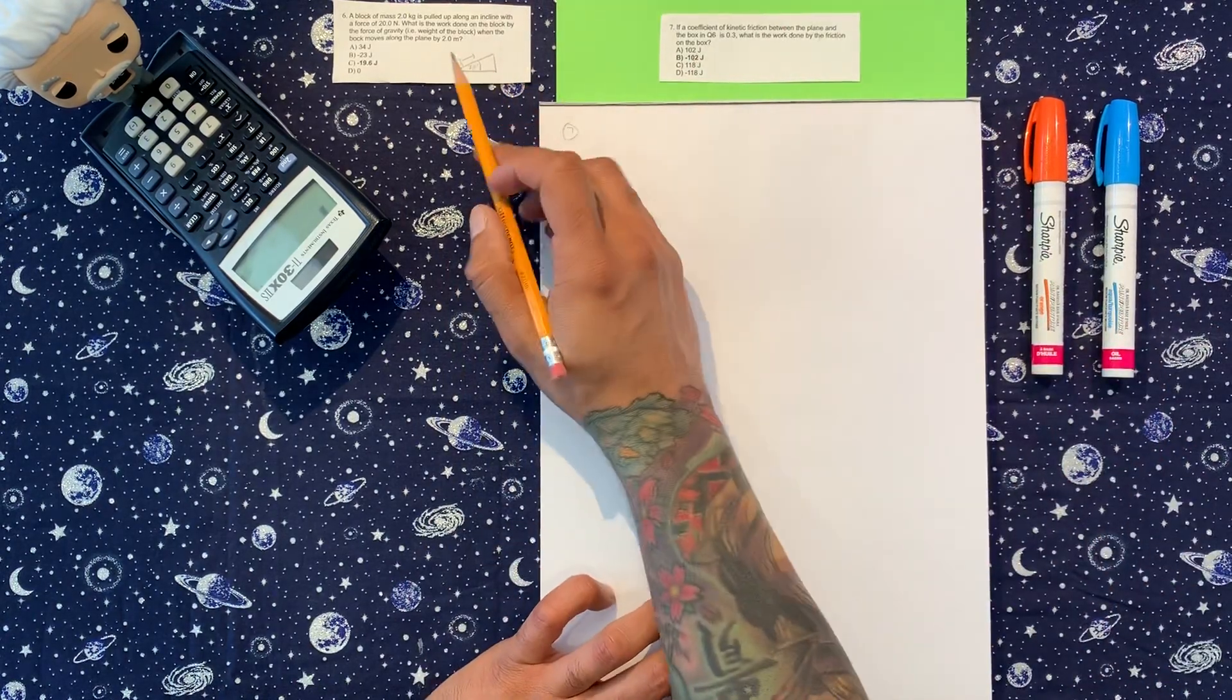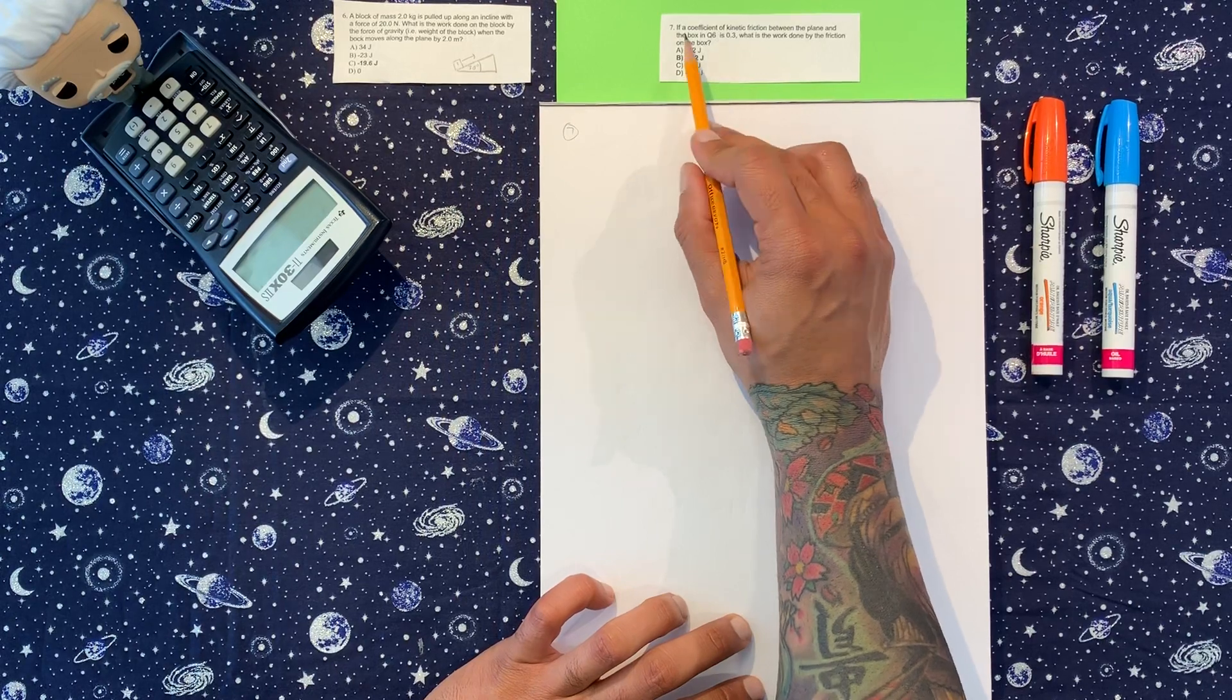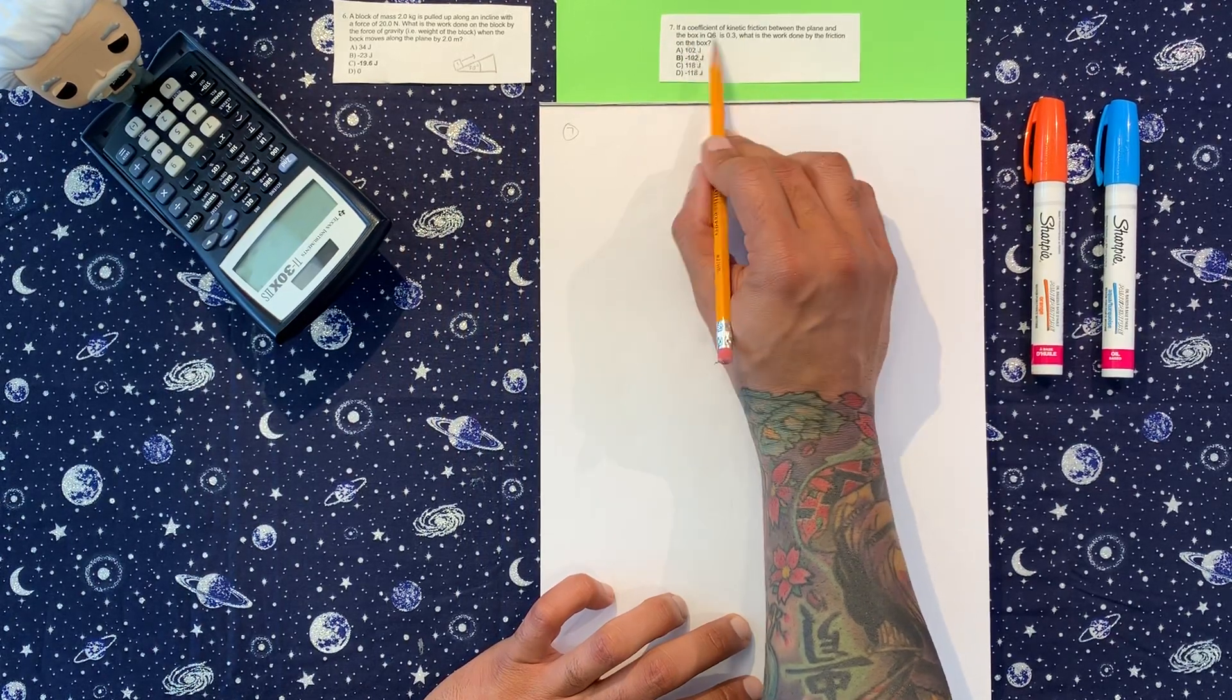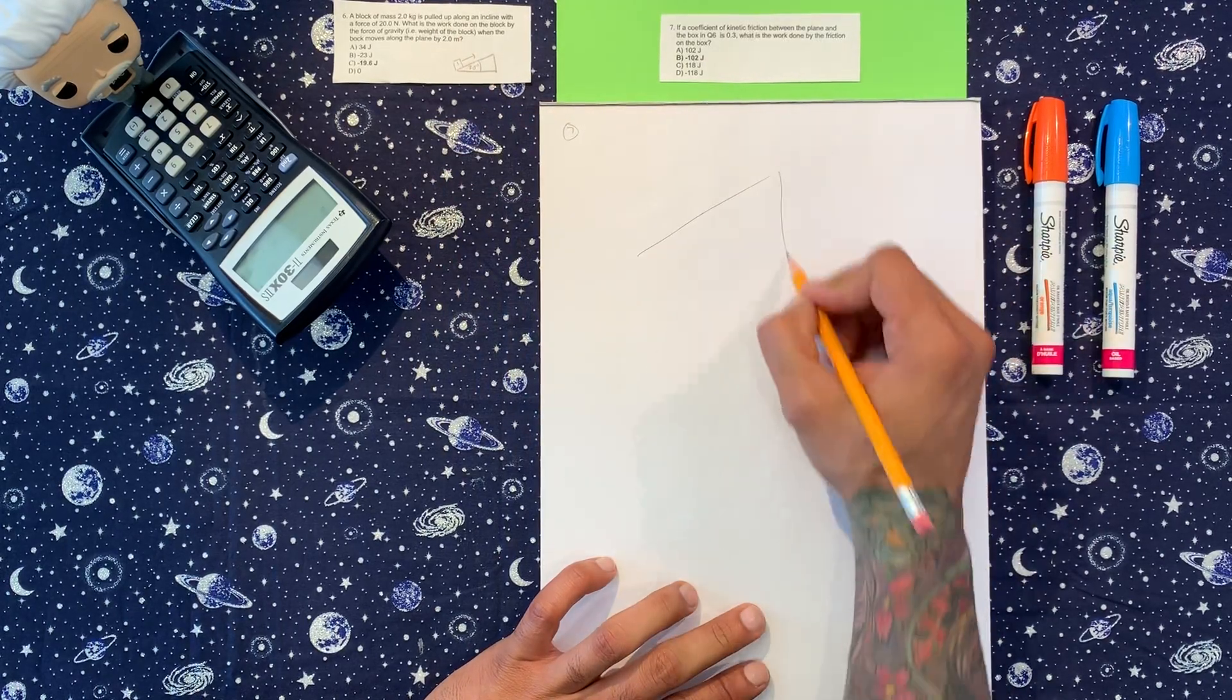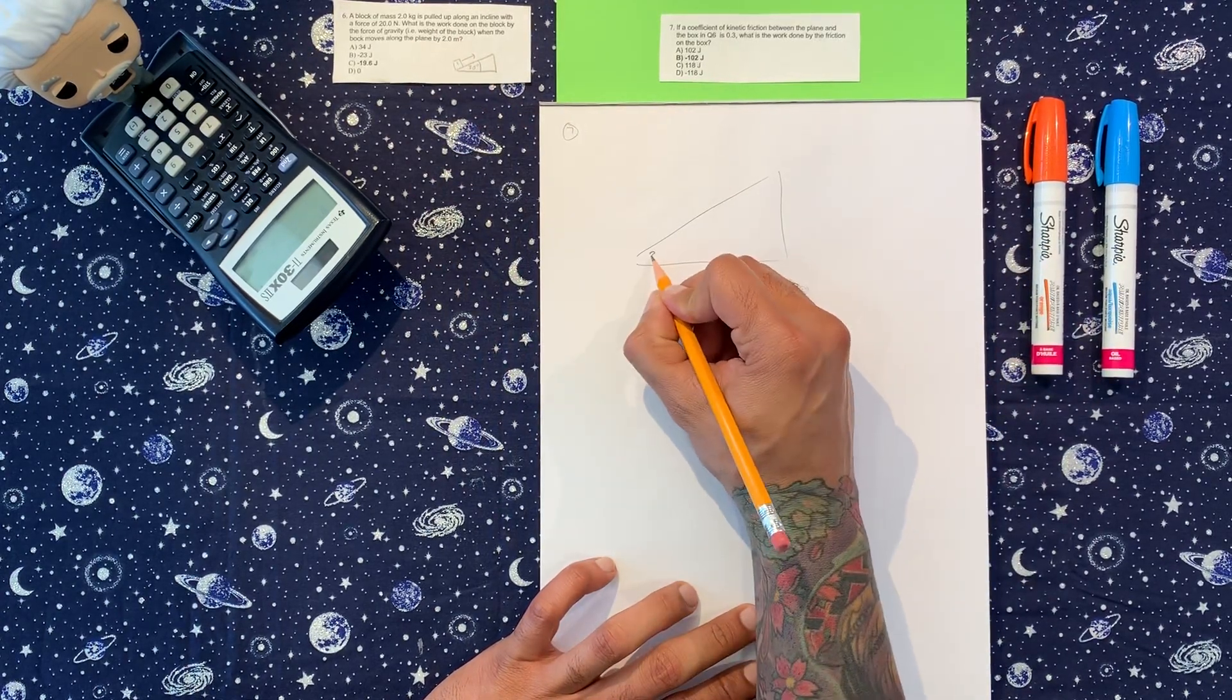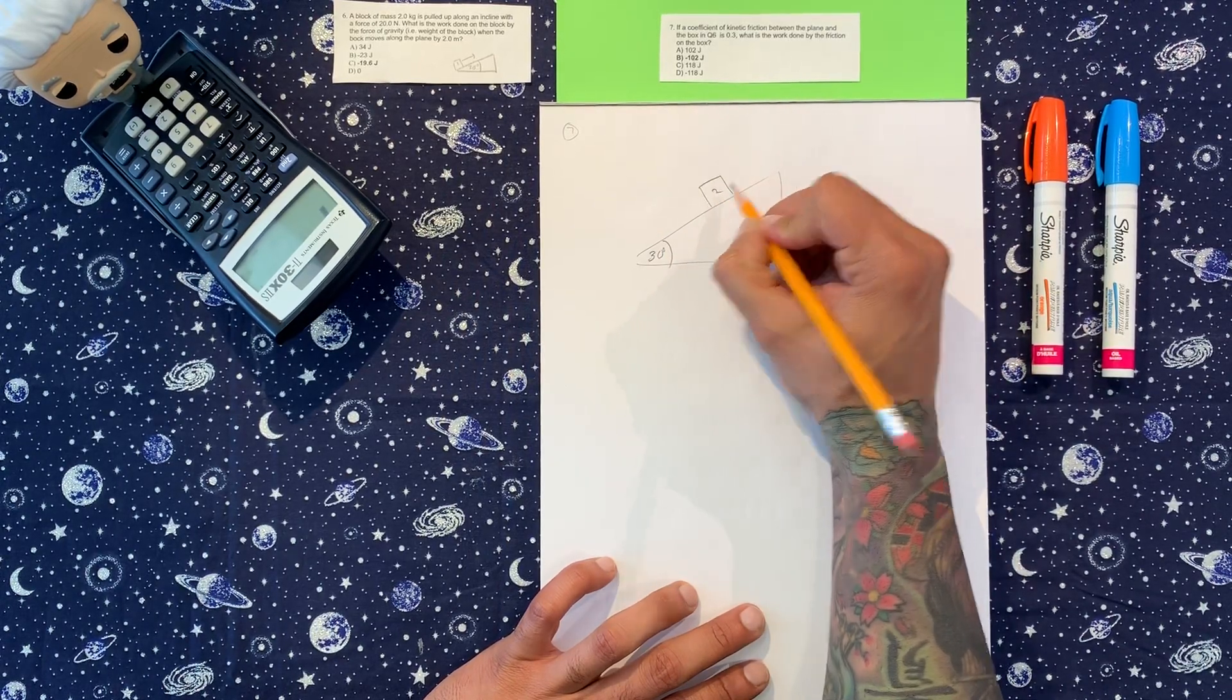So first of all, before we start, let me mention number six. The coefficient of friction between the plane and the box. I'm going to draw the free body diagram we had for this situation first. It was like this, we had an angle of 30. The box was up here.